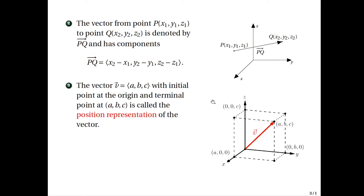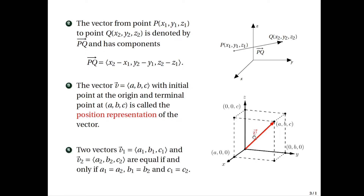A vector V with components A, B, C that starts at the origin will have a terminal point at the point A, B, C. This vector is what we call the position representation of the vector V. Now two vectors V1 with components A1, B1, C1 and V2 with components A2, B2, C2 are equal if and only if they have the same length and they point in the same direction — or in other words, their components are equal.